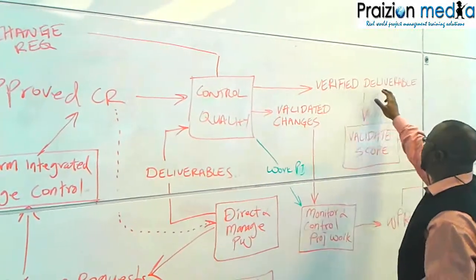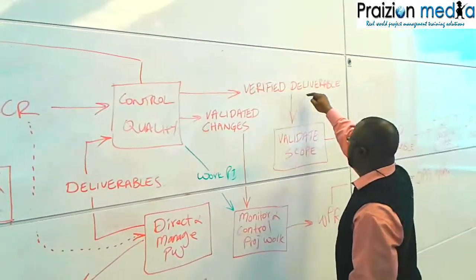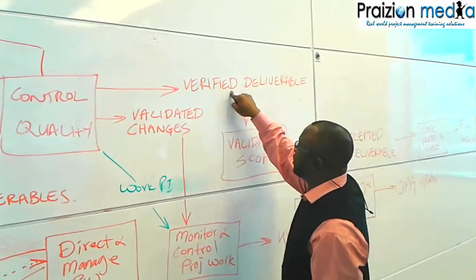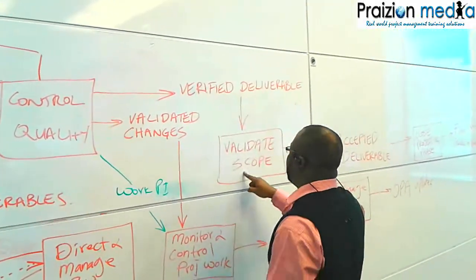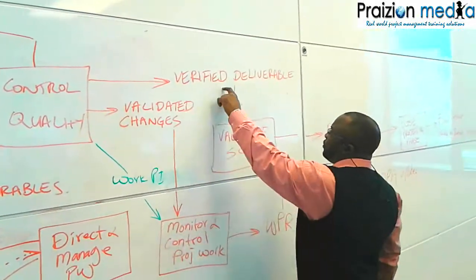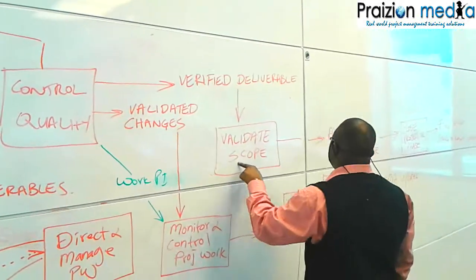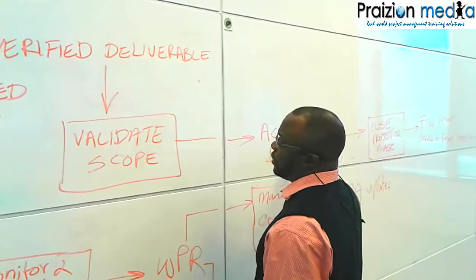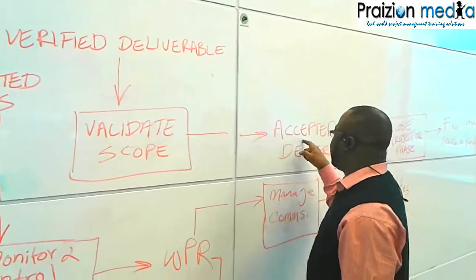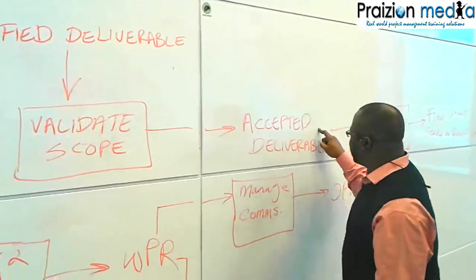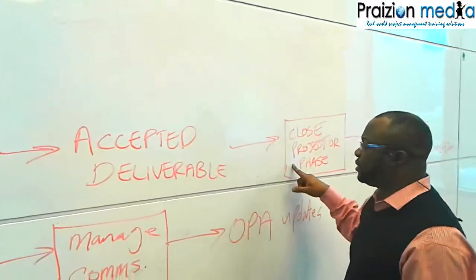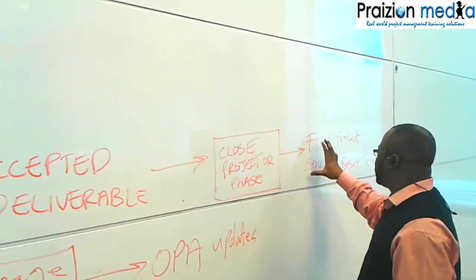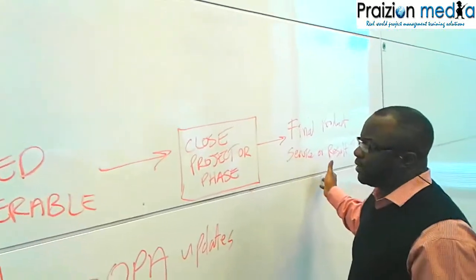We have the verified deliverable as an output going into Validate Scope, where your customer checks that verified deliverable. If the customer is happy, then we get accepted deliverables. Those accepted deliverables become an input to Close Project or Phase, after which you get final product, service, or result transition as an output.